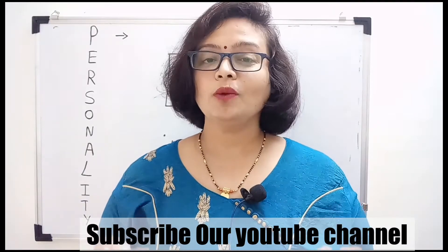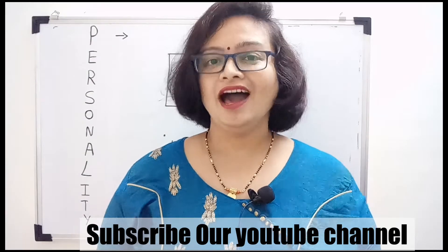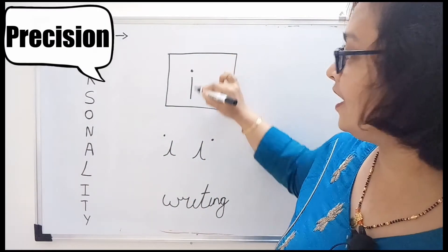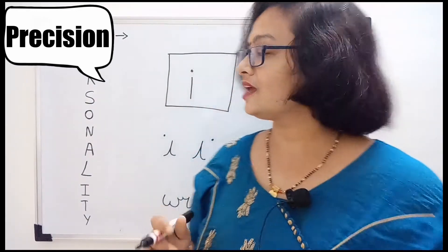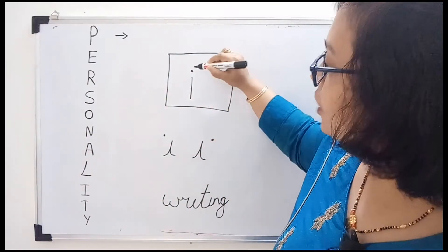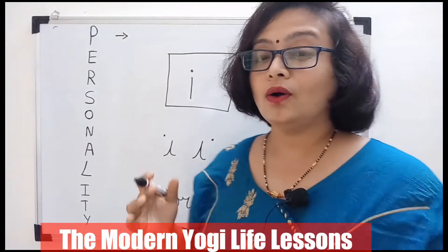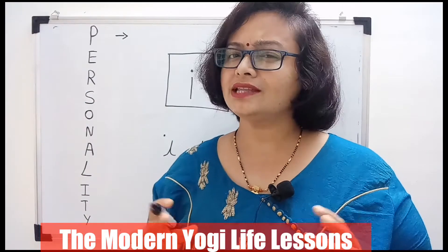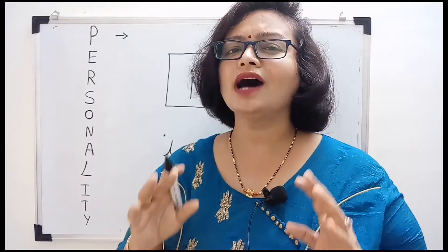The letter P signifies precision. Precision can be seen in the letter 'i' — how you place the dot on your letter 'i' talks a lot about your concentration. Precision can be seen in this type of letter 'i' where the dot is aligned with the stem. Placing a dot on the letter 'i' means making things clear, concreting issues without leaving room for doubt.